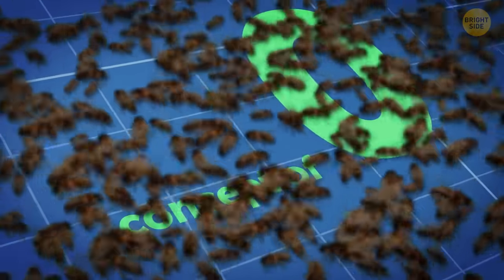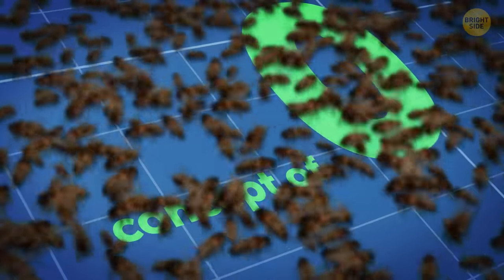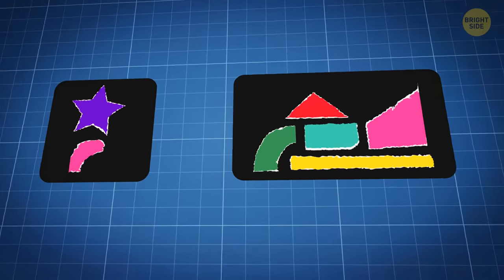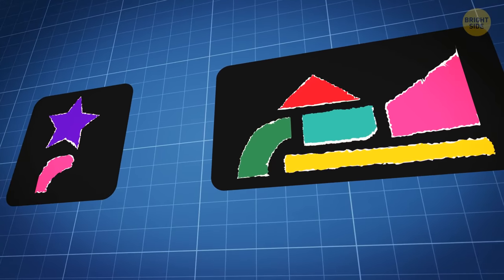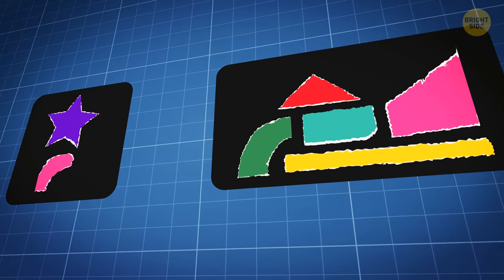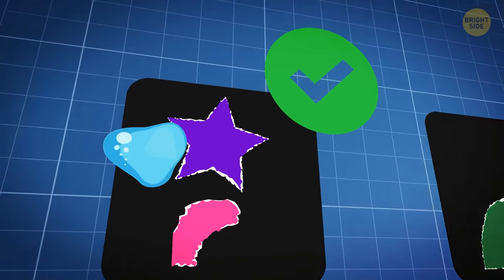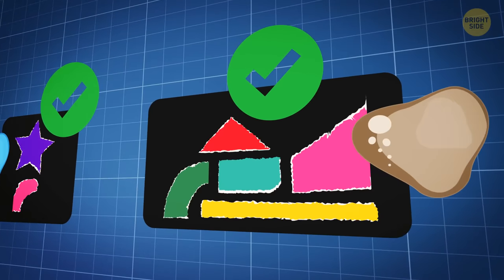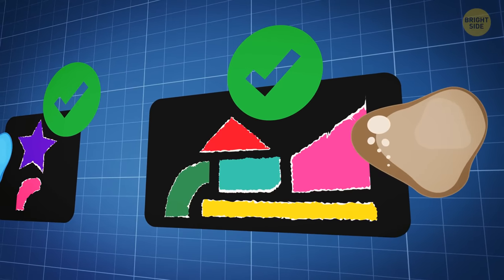They also showed an understanding of the concept of zero. Scientists trained them to recognize the smaller of two numbers. They showed the bees pictures with different numbers of shapes, rewarding them with sweet sugar water if they chose the picture with fewer shapes. But if they went for the picture with more shapes, they got a bitter taste of quinine.